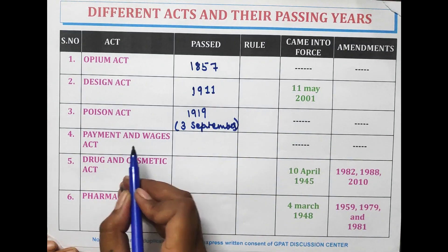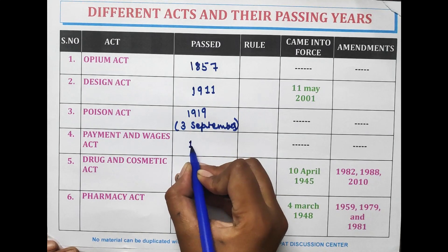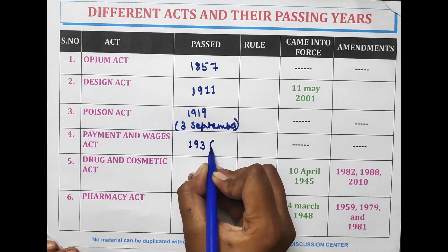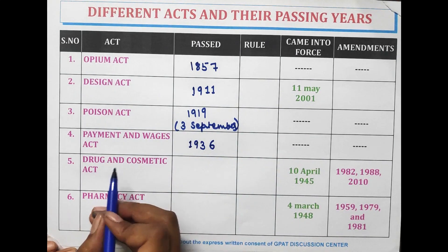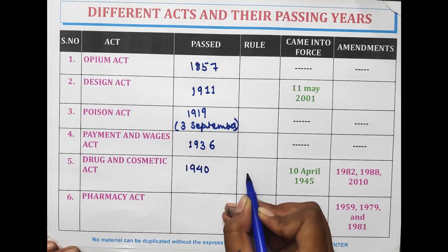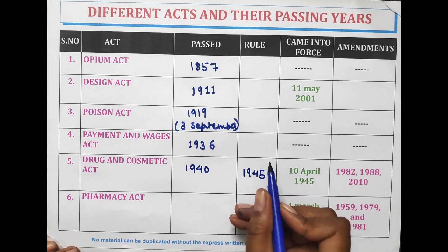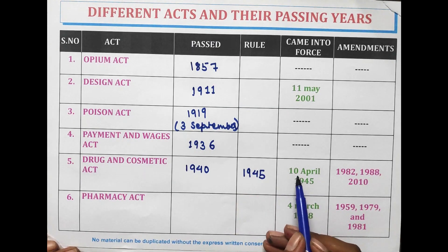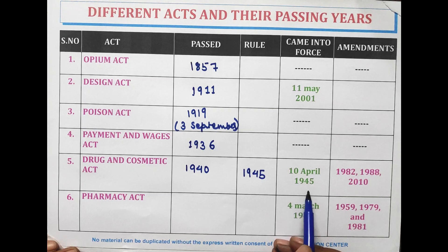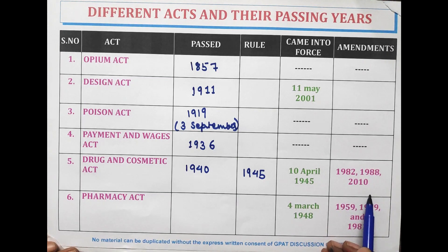The Payment and Wages Act was passed in the year 1936. The Drug and Cosmetic Act was passed in 1940 and the rules were passed in 1945. It came into force on 10 April 1945, and amendments were done in the years 1982, 1988, and 2010.